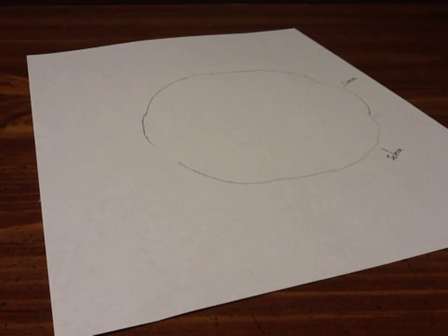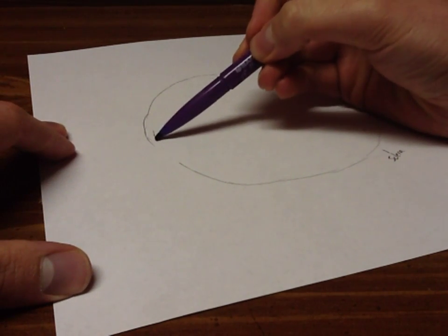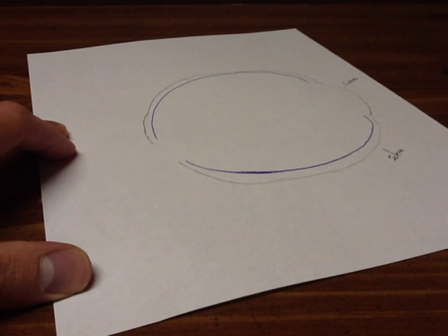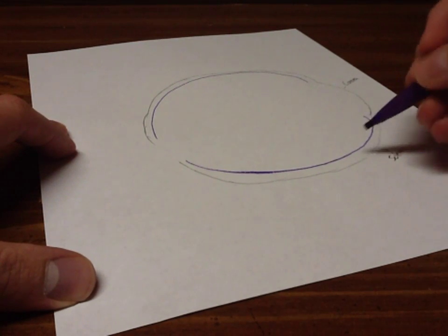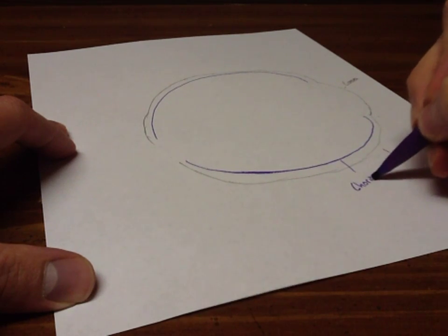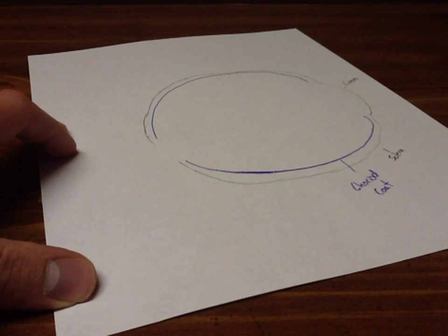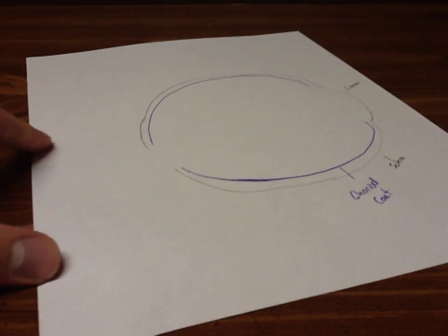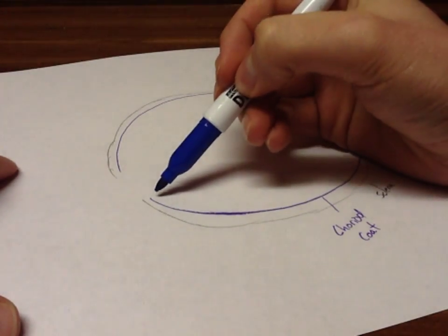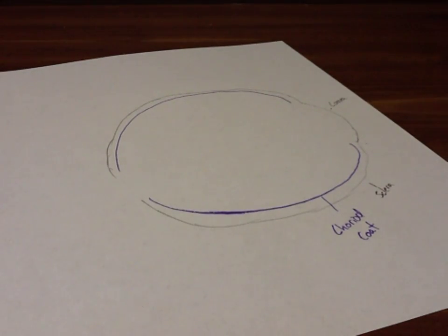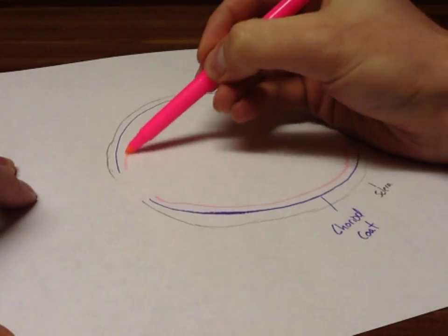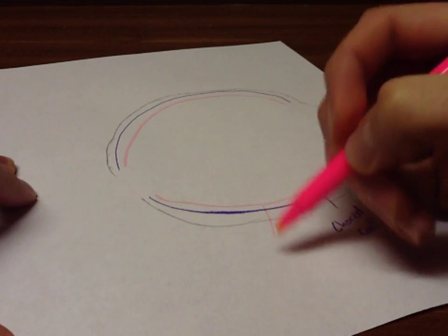And then we have a middle layer, try some different color here, a middle layer called the choroid coat. And then the inner layer, as we know, is the retina. That's the third layer.